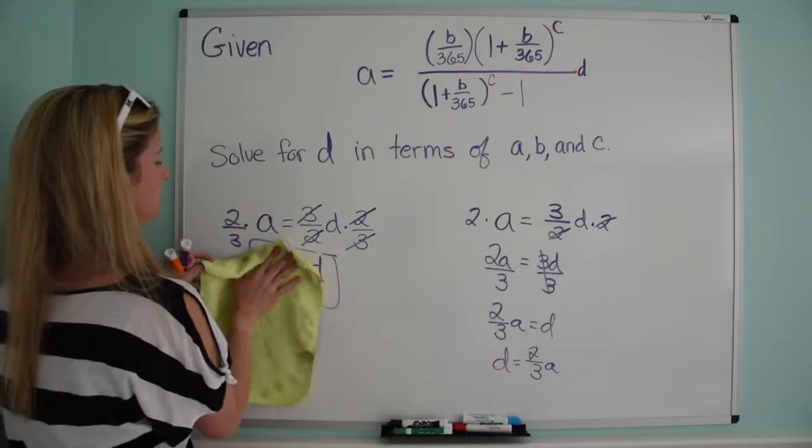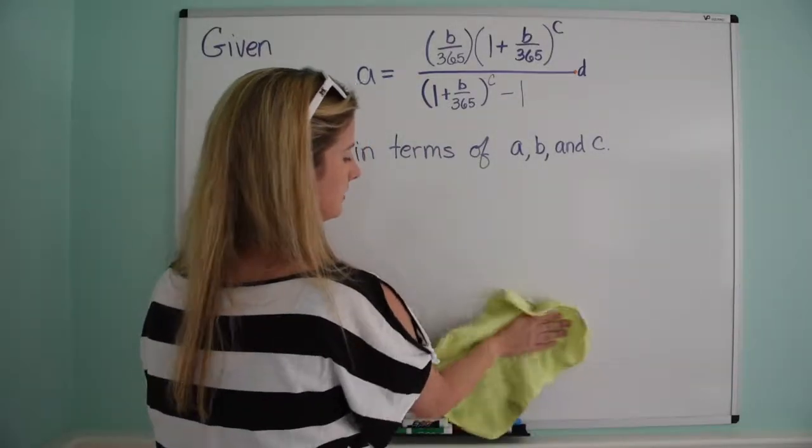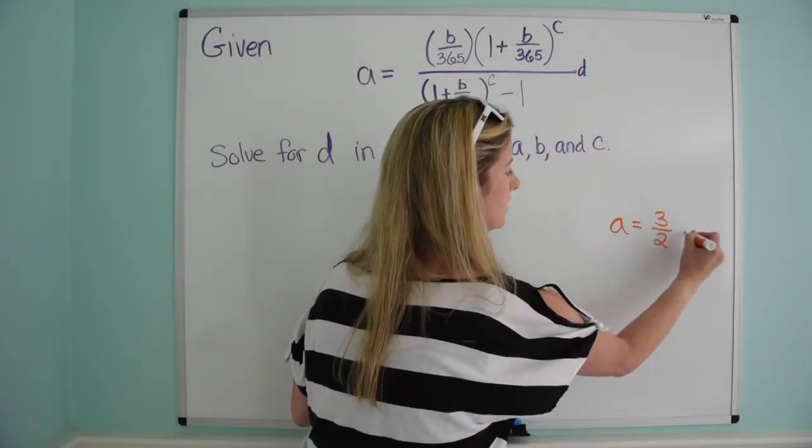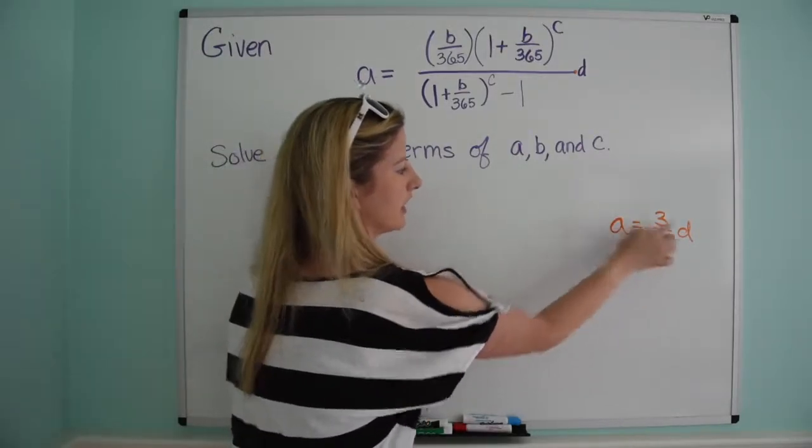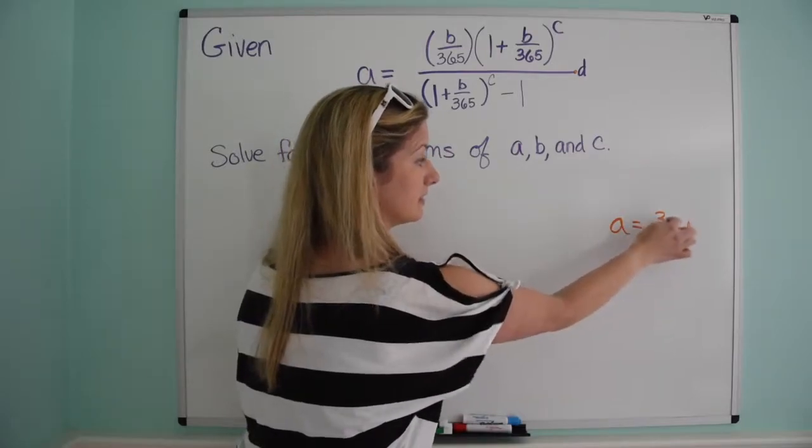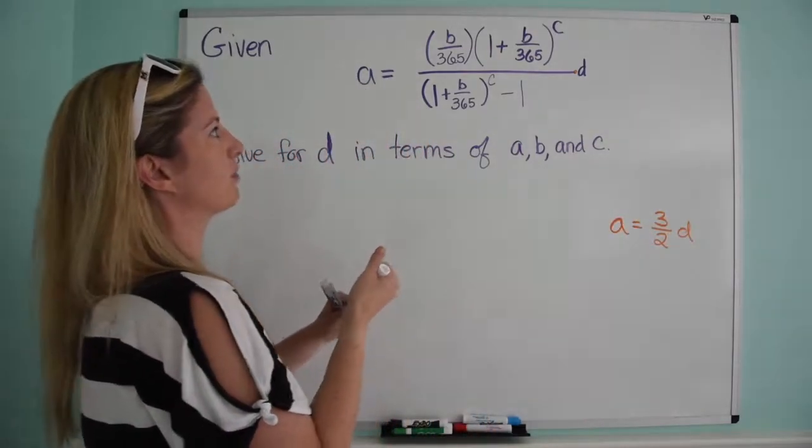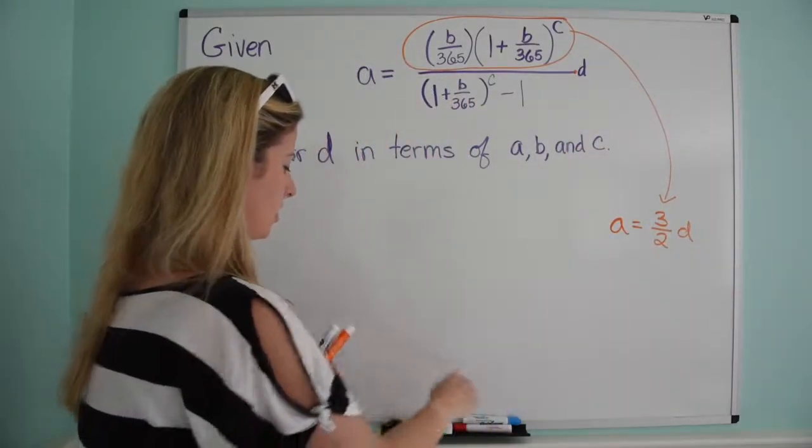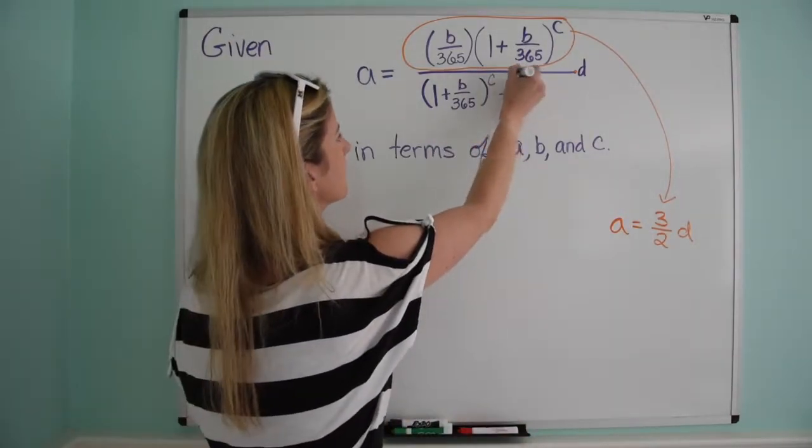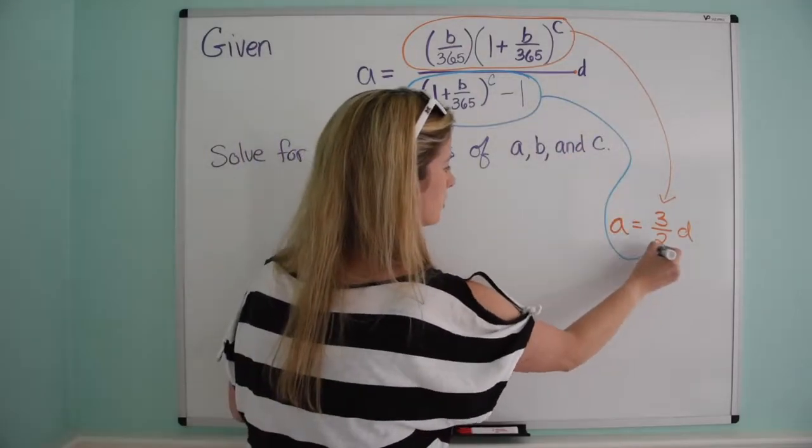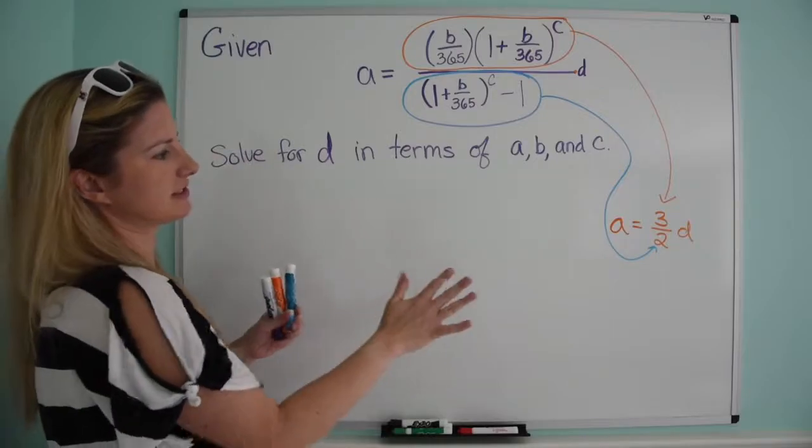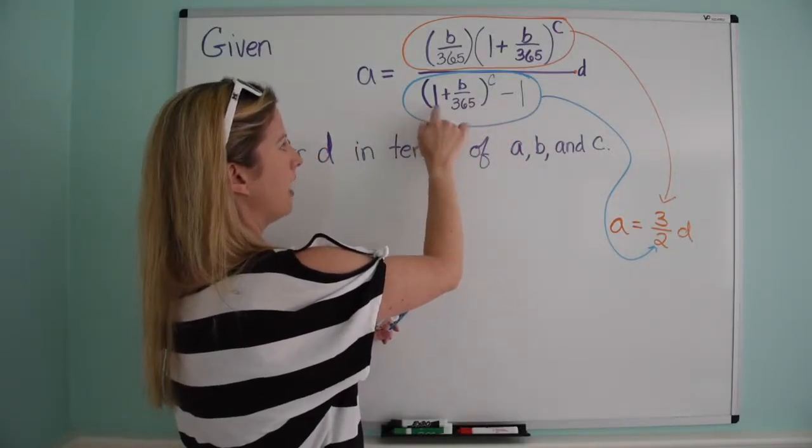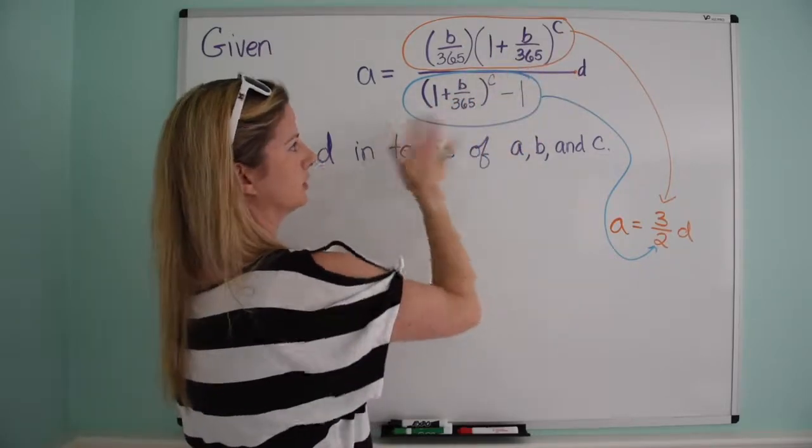So we're going to apply that same principle to this. I'm going to erase this and I want you to just think about it. I'm going to keep this on the side over here, a equals 3 over 2d. And you remember, all we did was multiply both sides by the denominator to cancel the denominator, and then we divide by the numerator to isolate d. So we're going to take the same approach here. We're going to treat this numerator the same way we treated 3, and we're going to treat this denominator the same way we treated 2. So the first step is if you want to get rid of this denominator, you multiply both sides by 1 plus b over 365, that quantity to the c minus 1.